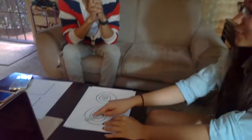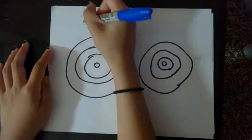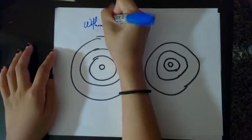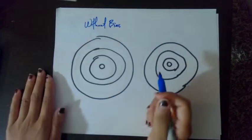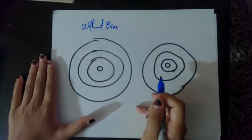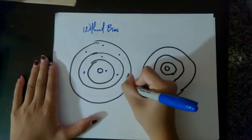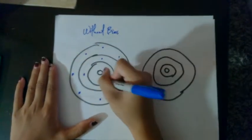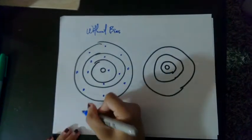To help you understand bias in sampling, I prepared a visual aid with target-shaped graphs, where I'm going to plot dots to show you where the data would more closely be. This graph on this side is going to be without bias. And since randomness is important in sampling, the dots would look random — they would be all over the graph.